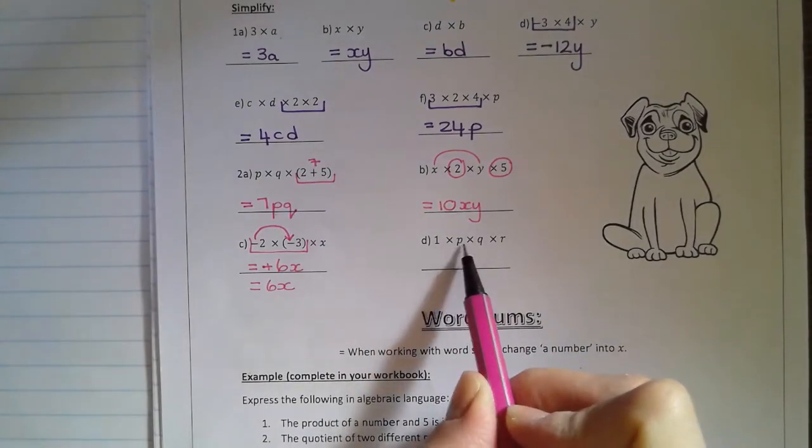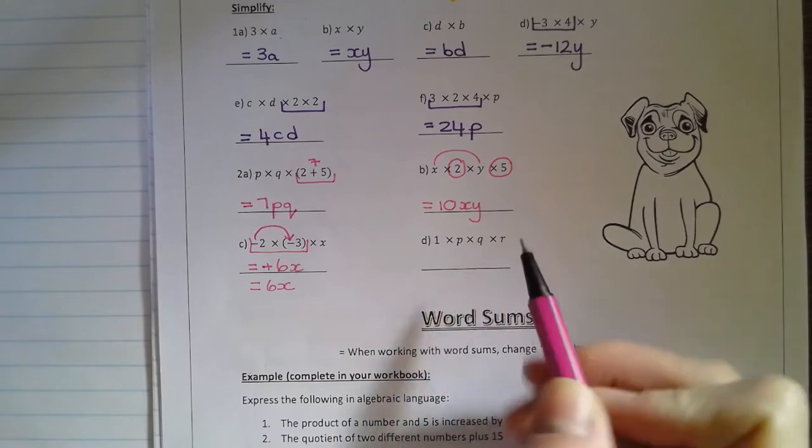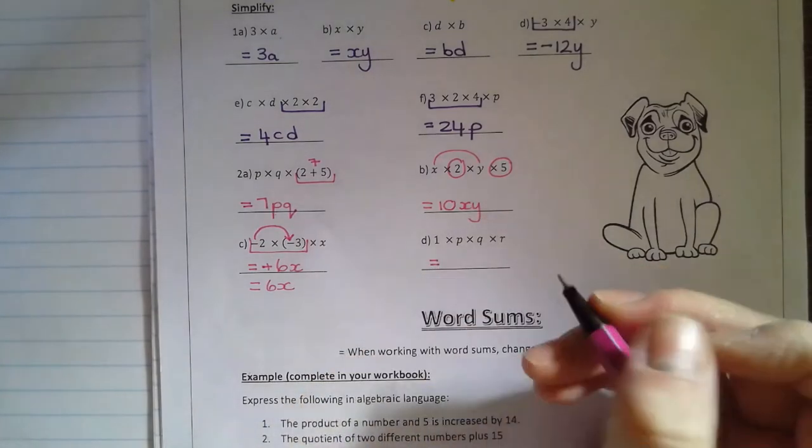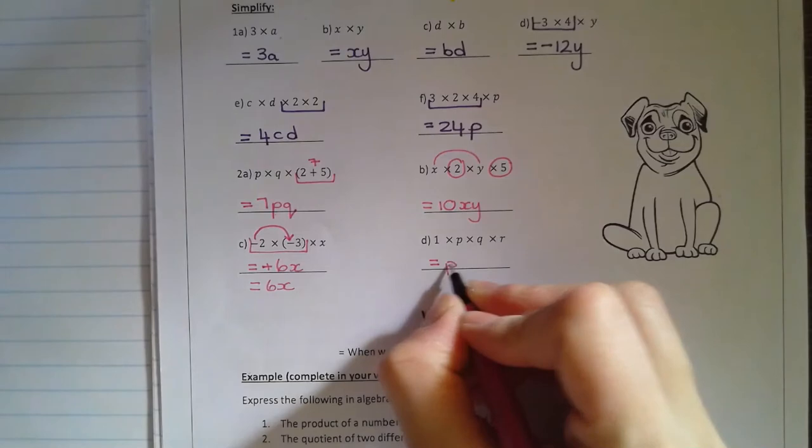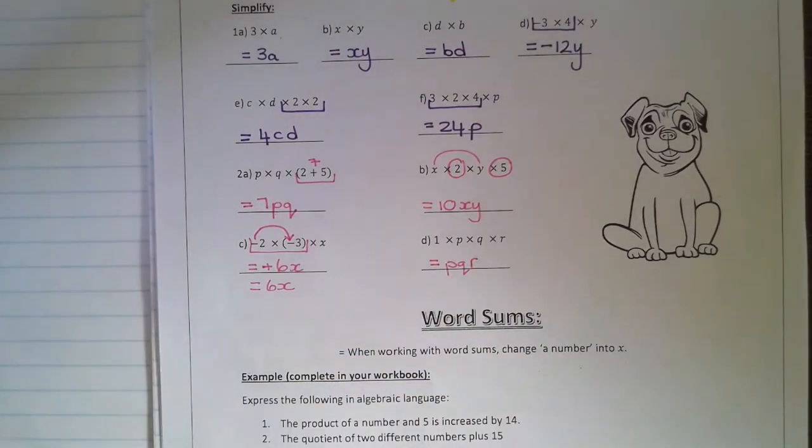Then one times P times Q times R. You could write it as one PQR, but we don't need the one there. It can go away. PQR.